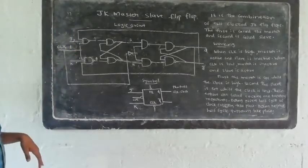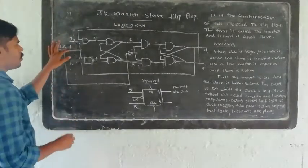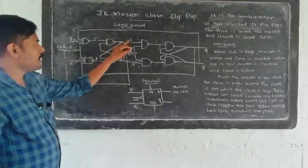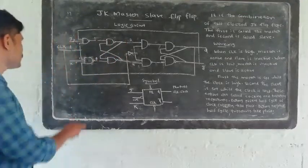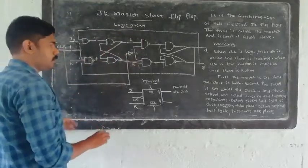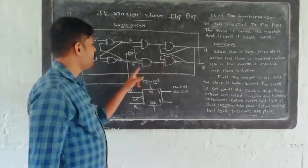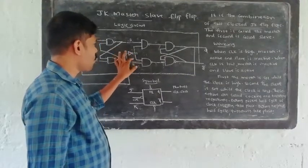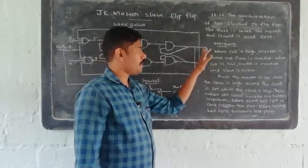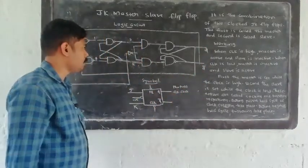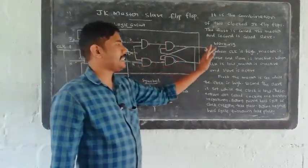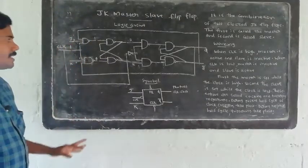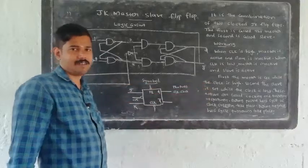When the clock is zero, the output of the JK flip-flop will be changed through the slave. When the clock goes to zero, the master becomes inactive, and then the slave becomes active and is said to be set. So: clock high → master is set; clock zero → slave is set.